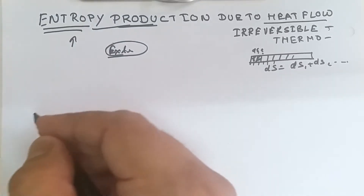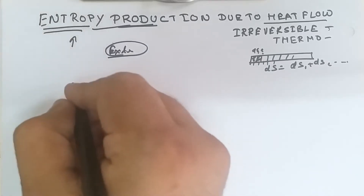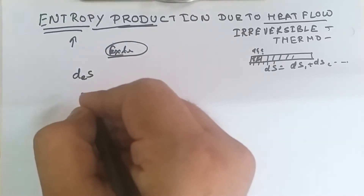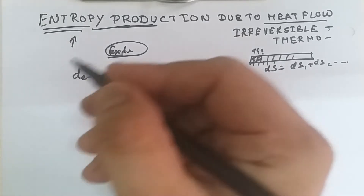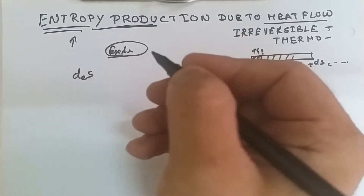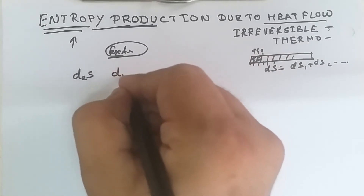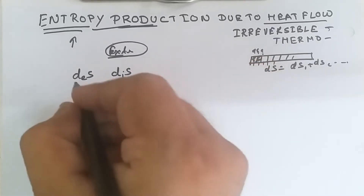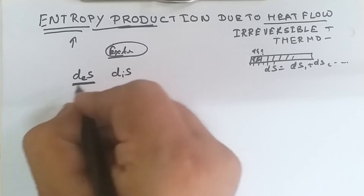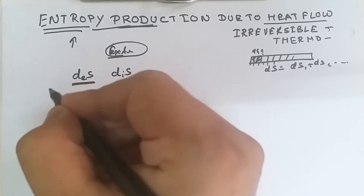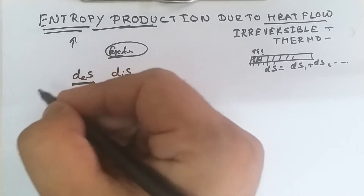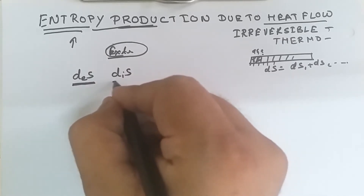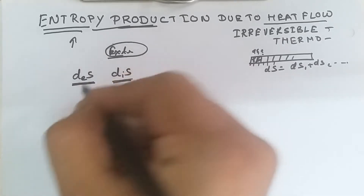To simplify, we split entropy into two parts. The first is deS, which is the entropy flow due to interaction with the exterior or surroundings. The second is diS, which is the entropy contribution due to changes inside the system. So deS represents entropy change from interaction with surroundings, and diS is the internal entropy change.